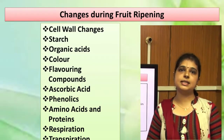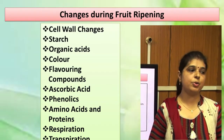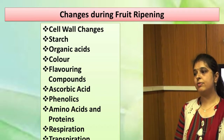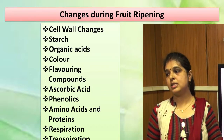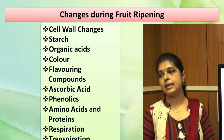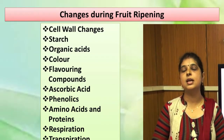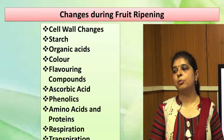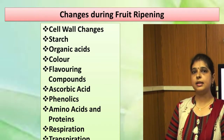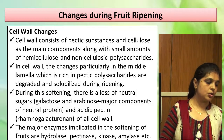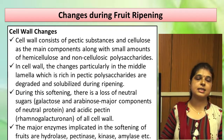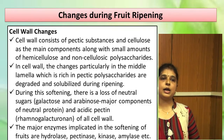There are many changes which occur during the ripening process. I have described them list-wise: cell wall changes, starch conversion, organic acid changes, color changes, flavoring compounds, ascorbic acid, phenolics, amino acids and protein, respiration, transpiration, and ethylene evolution rate. Let me discuss the first: cell wall changes.